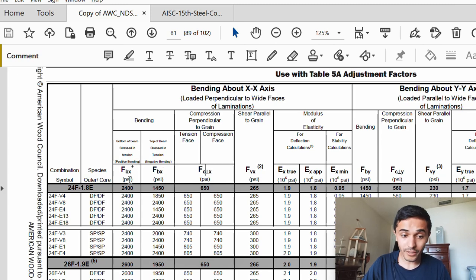One is for positive bending, the bottom of the beam is stressed in tension and we have 2400. For the top of beam stressed in tension or negative bending we have 1450.